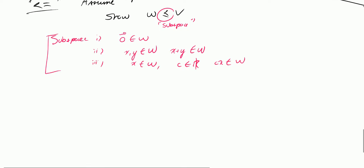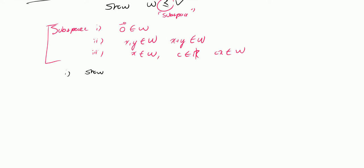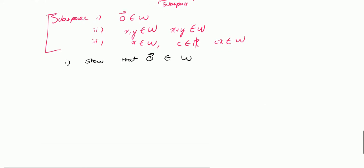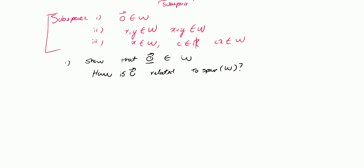Let's start with the first part: show that zero belongs to W. How can I do this? Well, I can start with zero and its relation to span of W. How is the zero vector related to span of W? Let's think about span for a second. We know that span of W is equal to the set of all linear combinations of vectors in the set W.